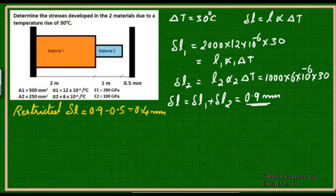When there is a restriction, it will be creating stresses in the material. Stress will be developed corresponding to this restricted elongation of 0.4 mm. When these two members are trying to elongate and then there is a restriction, each material will be pushing each other.